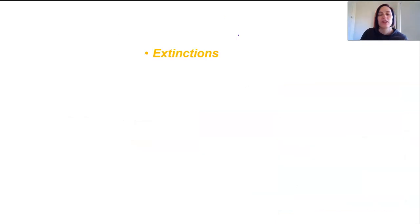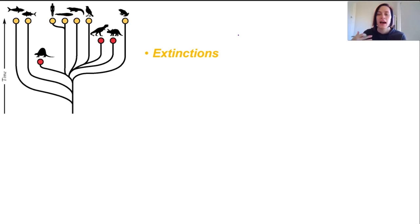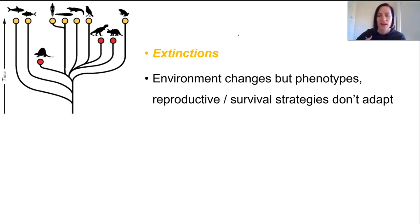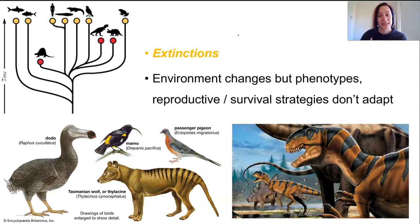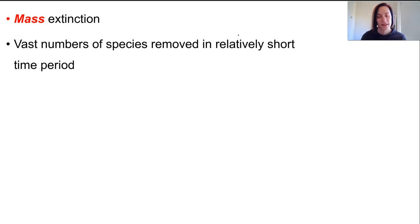Another change that can create huge evolutionary radiations are extinctions. Extinctions of species occur when the environment changes, but a species phenotype or reproductive strategies or survival strategies don't actually adapt with that change. This might be because of the actual environment conditions suddenly being outside of a tolerance range, or it might be because a change has allowed species interactions to change, like a new predator entering this ecosystem.